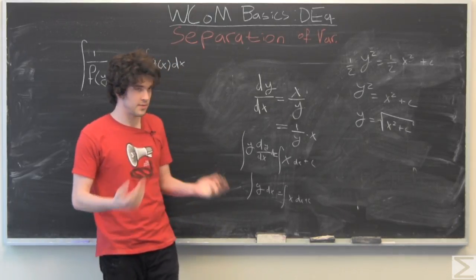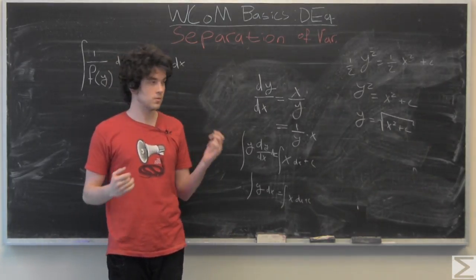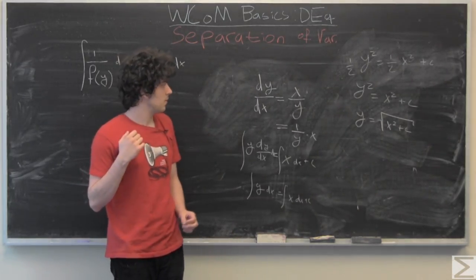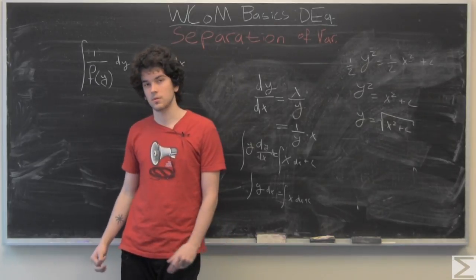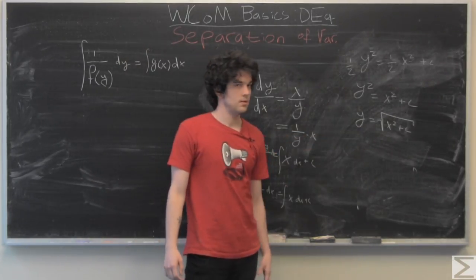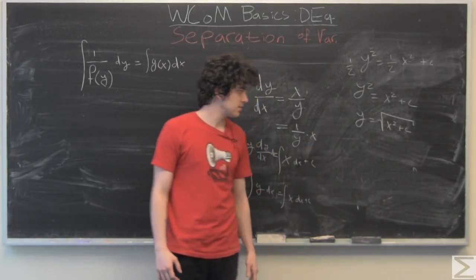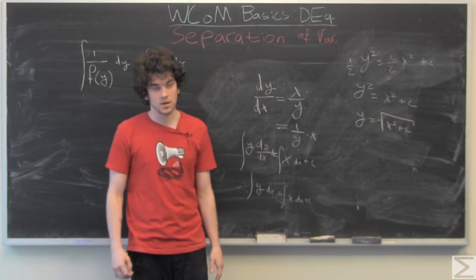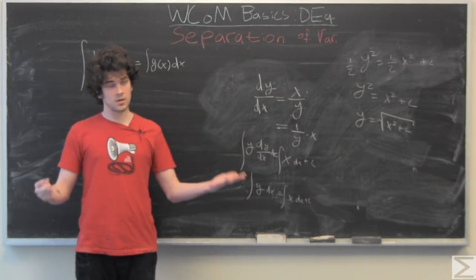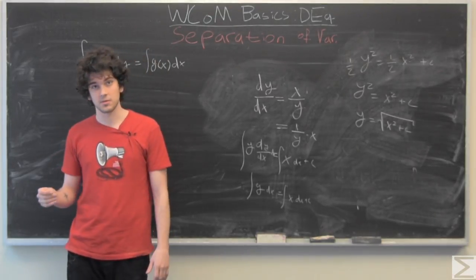And if we have initial conditions like y prime at time 0 equals 0 and y at time 0 equals 4, then we can solve for c. And if c is 0, we get y equals x. If c is something else, we get a little messier function. But that's how you solve the most basic differential equation or one of the most basic differential equations.